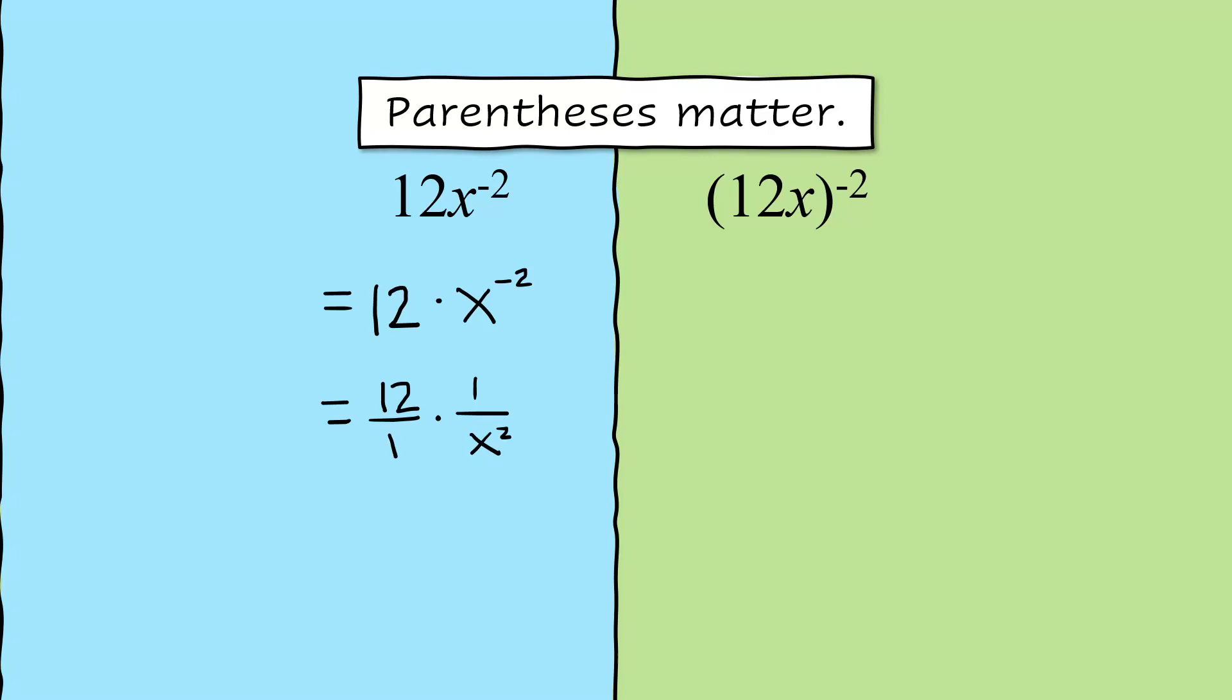Now if you don't understand how that works, I put a link up above to an explanation as to why negative exponents flip around. And multiplying straight across, we get 12 over x squared.